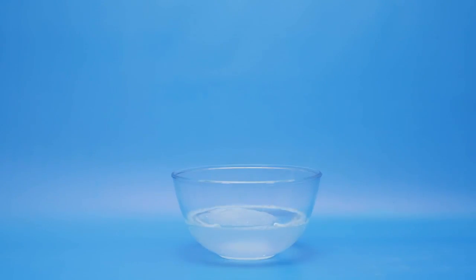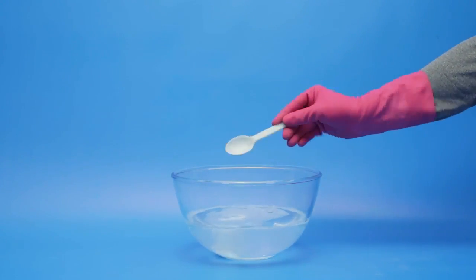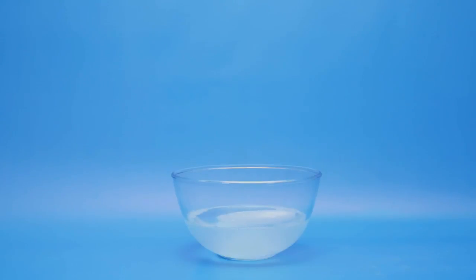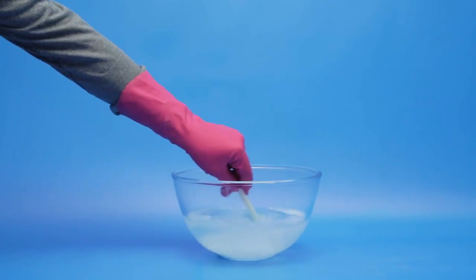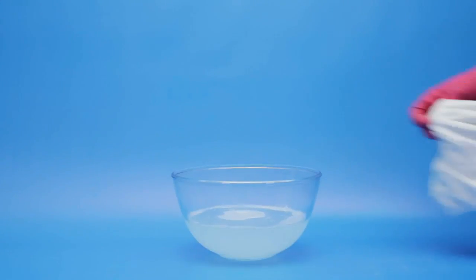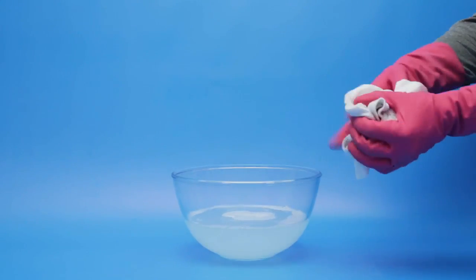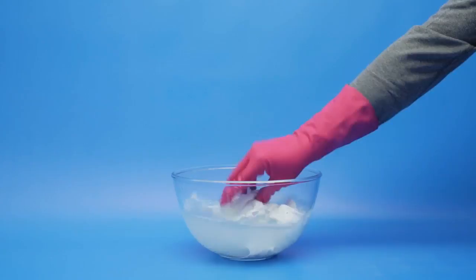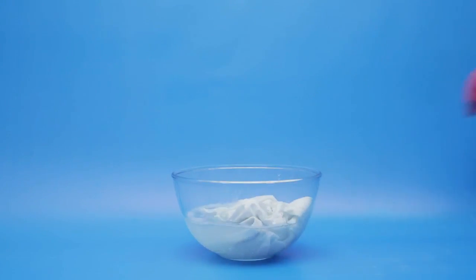To use oxygen bleach as a pre-wash treatment, mix one to two tablespoons per gallon of water. Place the stained item in the water and leave to soak for up to an hour. Tough or old stains can be soaked overnight.